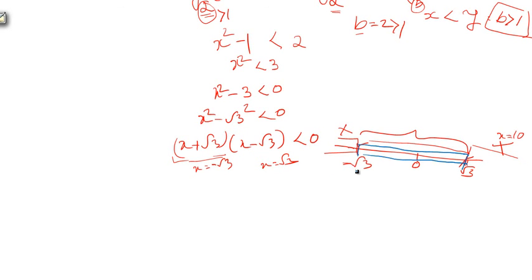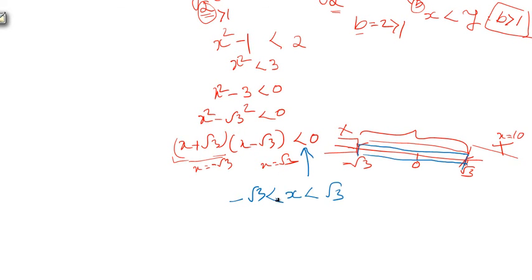Marking this with a new color: the range of x for which the inequality holds is -√3 < x < √3. However, this is not the final solution because we must consider one more constraint from the original expression log₂(x² - 1) < 1.